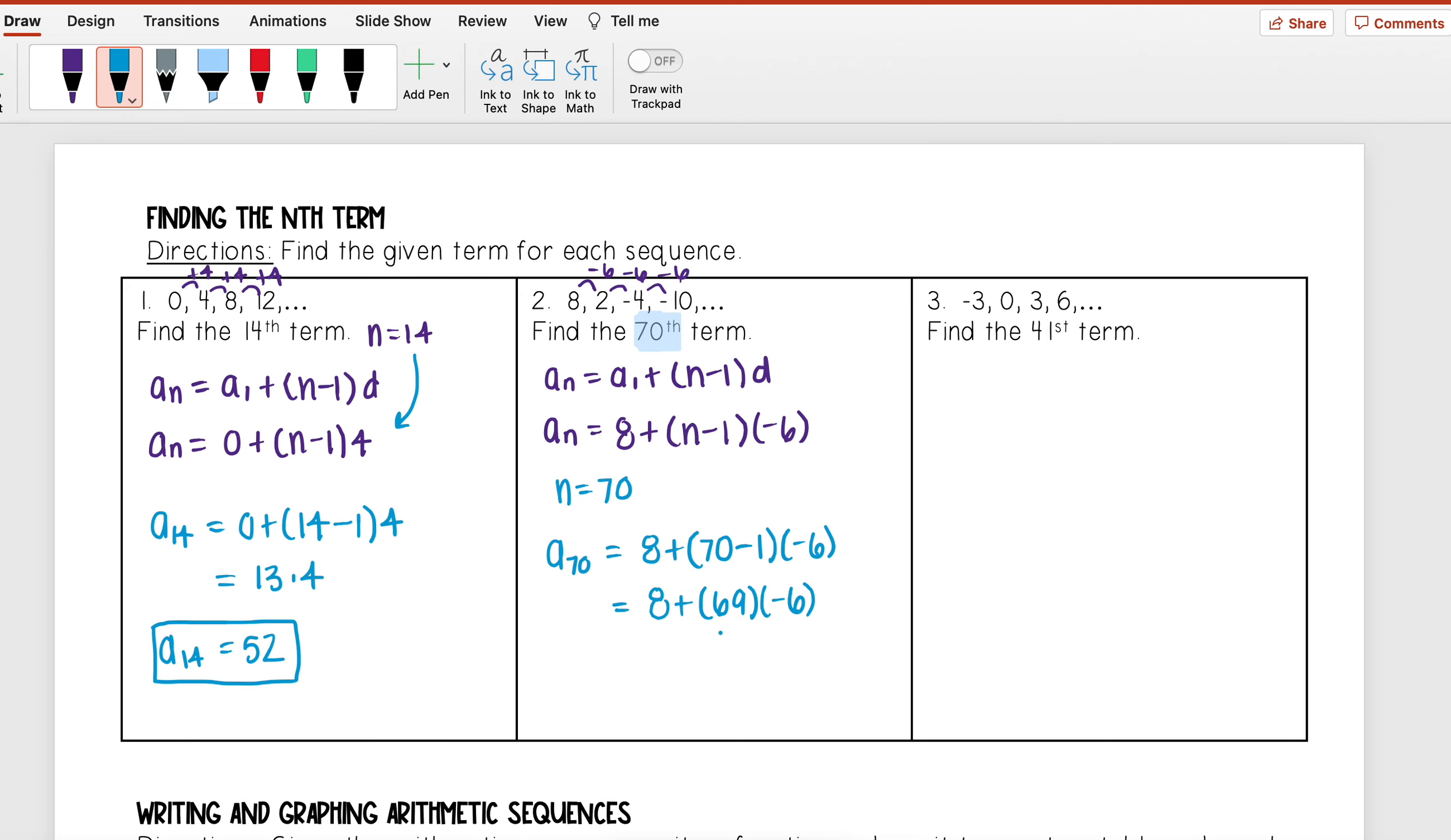69 times negative 6 I get negative 414, and then when I add 8 you should get that the 70th term is negative 406.